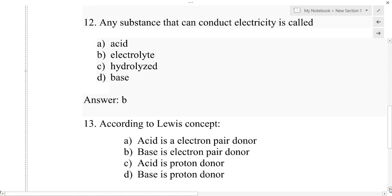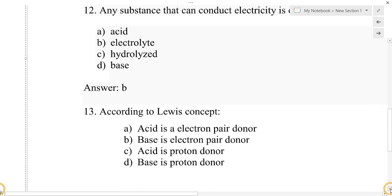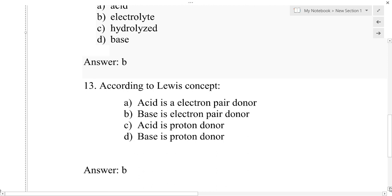Question number 13: According to the Lewis concept — option A: acid is an electron pair donor, option B: base is an electron pair donor, option C: acid is a proton donor, option D: base is a proton donor. The correct answer is option B: base is an electron pair donor.